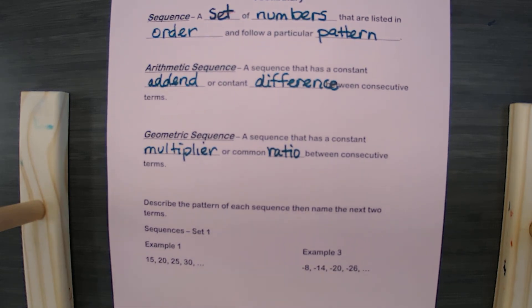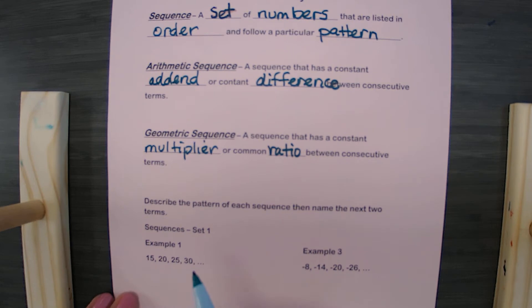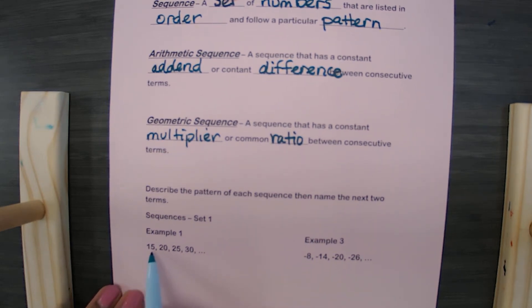So let's look at a few examples. Describe the pattern of each sequence, then name the next two terms. So the first thing we want to do is we want to check to see if it's arithmetic. I am going to look at the first term, it's 15. The second one is 20. It looks like we went up by 5. Let me check again. I go from 20 to 25, I also went up by 5. So I am adding 5 each time in this sequence. So to find the next two, I simply need to add 5. 30 plus 5 gives me 35, and 35 plus 5 gives me 40. Those are the next two terms.